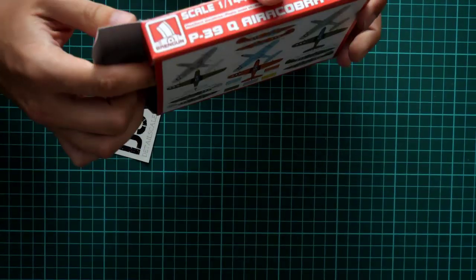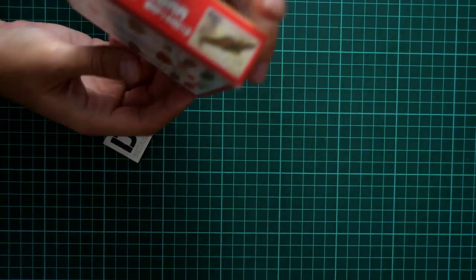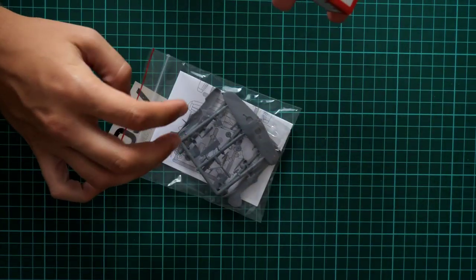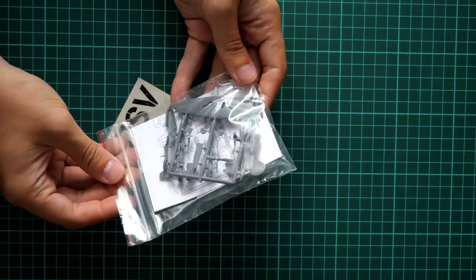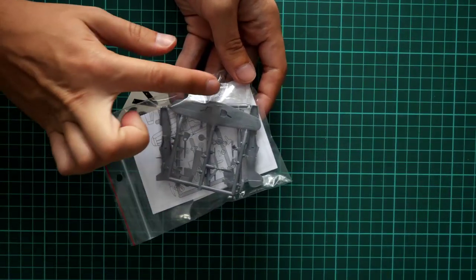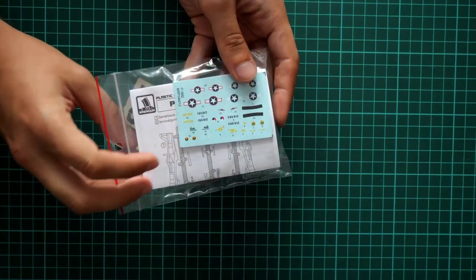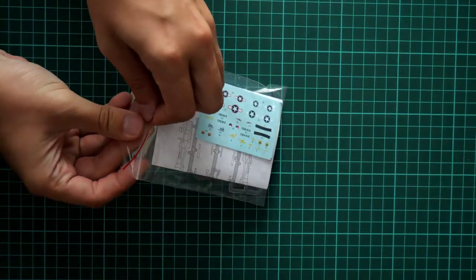Now this is a side-opening box, so just give me a second. Here is what we have inside. I don't see anything extra. So here we have all plastic sprues together with assembly manual, clear sprue, and also decals sheet. So let's open it.